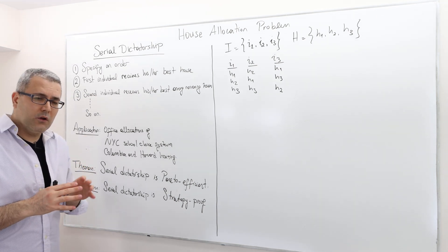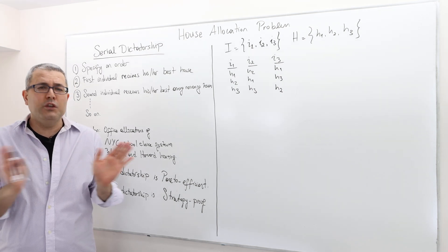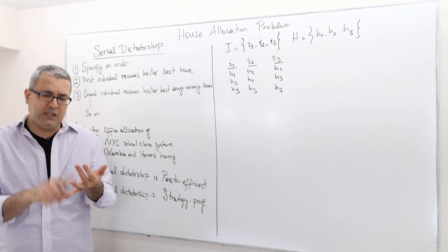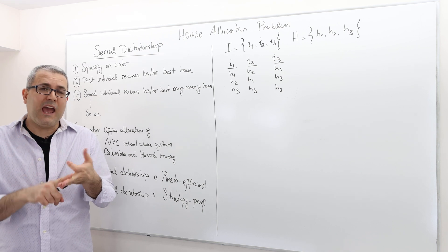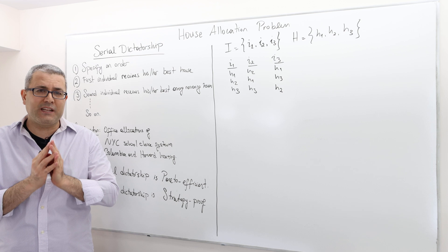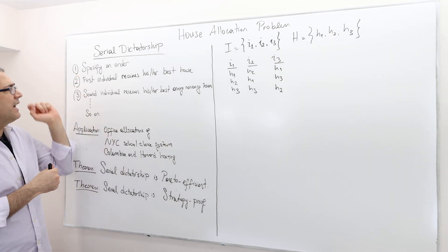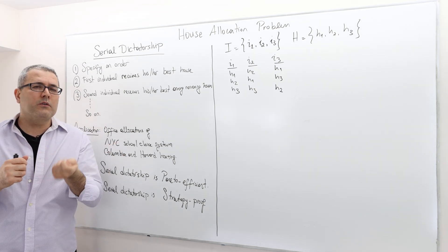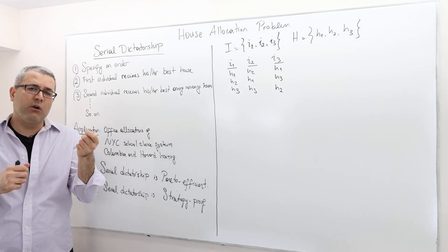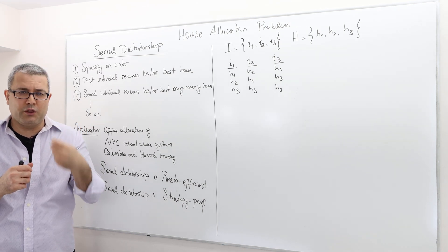How does it work? First of all, this is a matching mechanism, meaning you can apply it to any house allocation problem, independent of the number of houses, independent of the number of individuals, and independent of their preferences. What you're supposed to do is first ask the individuals their preferences over houses, and then second, specify an order — an order over individuals, meaning who is going to choose first, who is going to choose second, who is going to choose third, and so on.